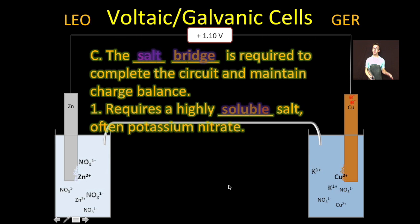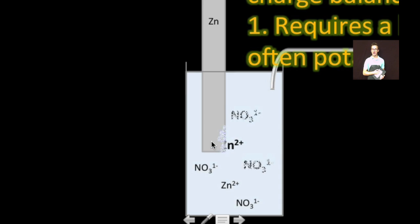Now, the salt bridge is a really important part of the voltaic cell. It's required to complete the circuit and maintain charge balance. The salt bridge, as you look at your voltaic cell on your screen, is this thing here. Often, we take a highly soluble salt, like potassium nitrate, dissolve it in water, and fill our salt bridge with it. Here's why that's so important. As zinc is oxidized, zinc ions plop out into solution, which creates a buildup of positive charge. If nitrate ions from our salt bridge didn't enter the oxidation half cell to neutralize that buildup of charge, the reaction would stop.